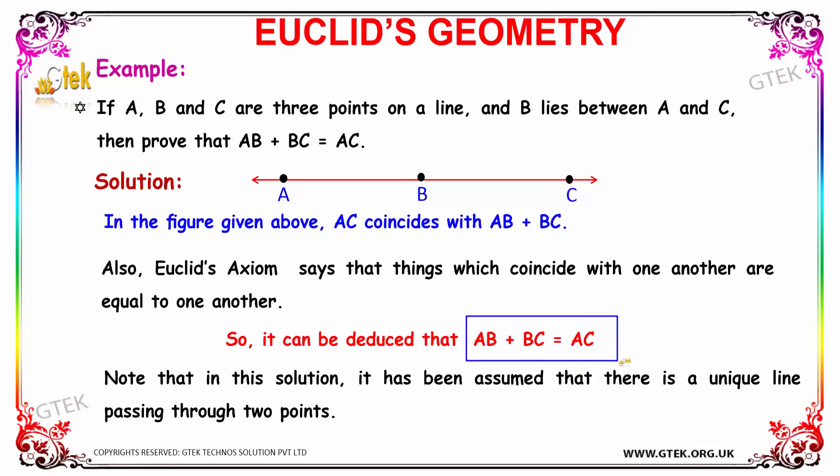We need to note down in terms of solution that this is based on the assumption that there is a unique line passing through two points.